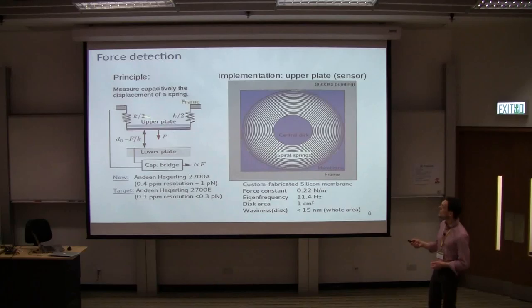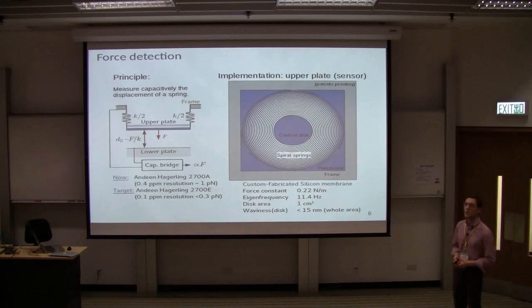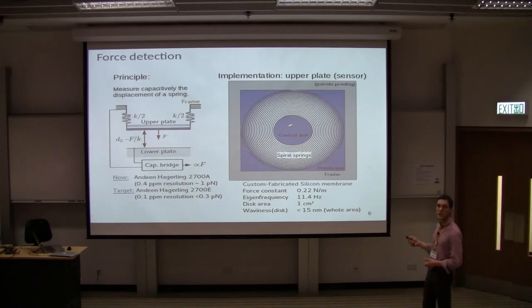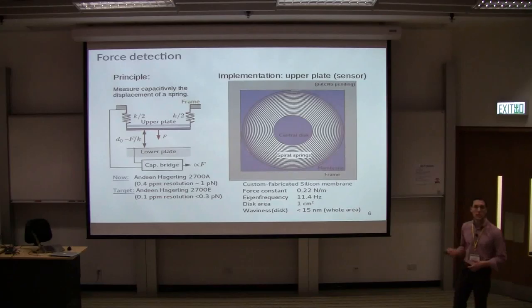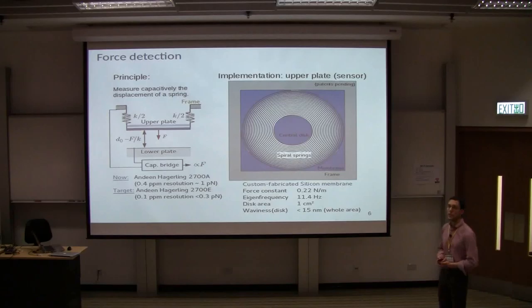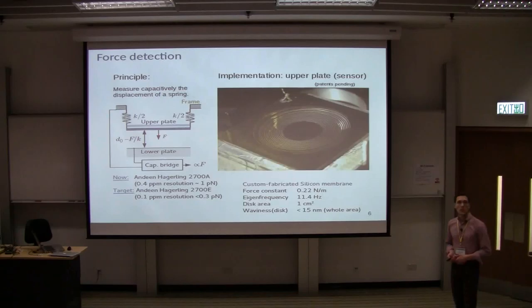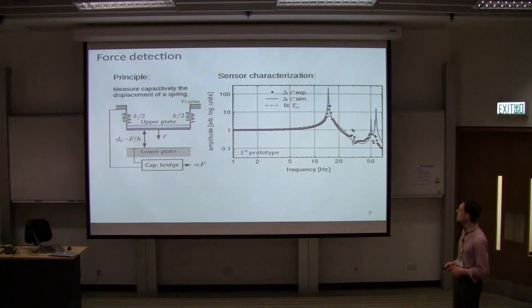The sensor, which is here, looks actually like this. So it's a microfabricated membrane, thickness hundred micrometer, from silicon, boron-doped. Here you have one square centimeter central disk. That is the upper plate. And you have these spiral shaped springs which are optimized for the task. And the waviness of the central disk has been made to be 15 nanometer over the entire surface. This would be a photo of the first prototype. This was laser cut. But we have also tried other methods of fabrication.